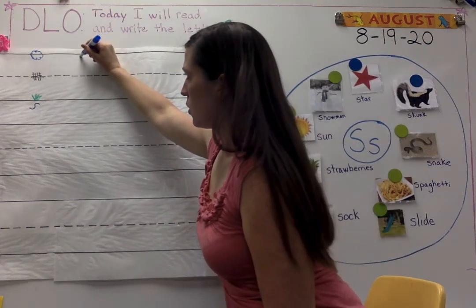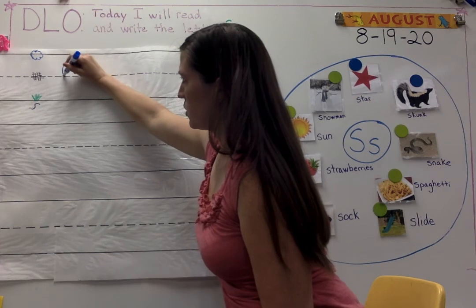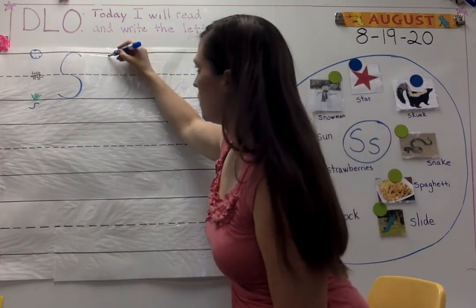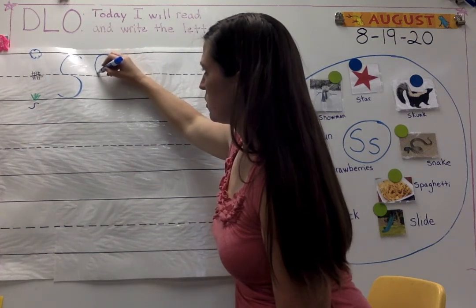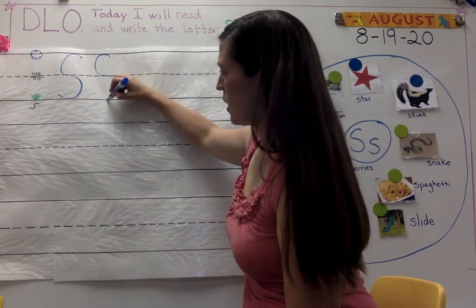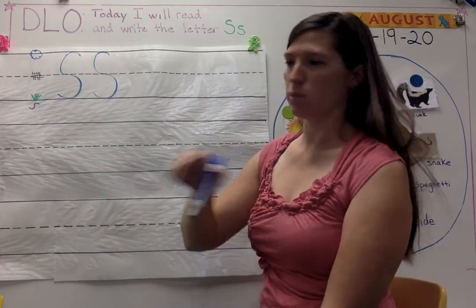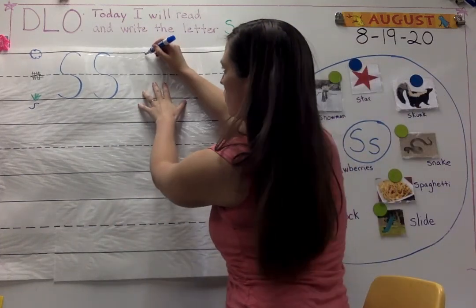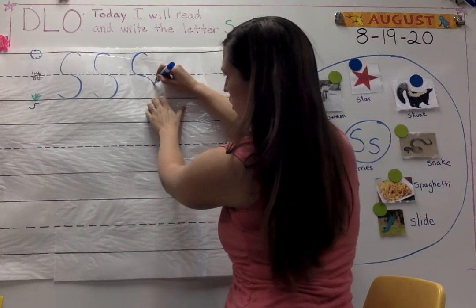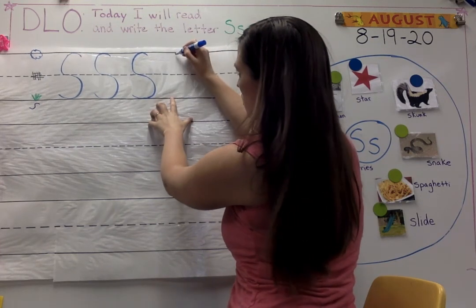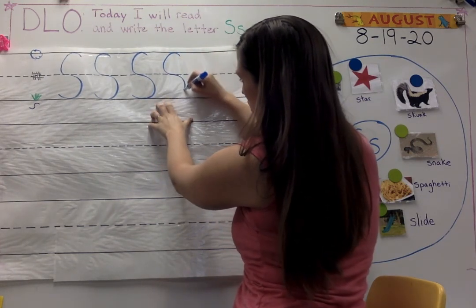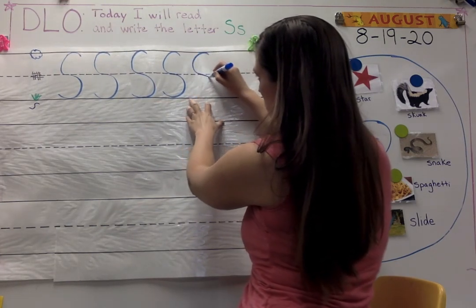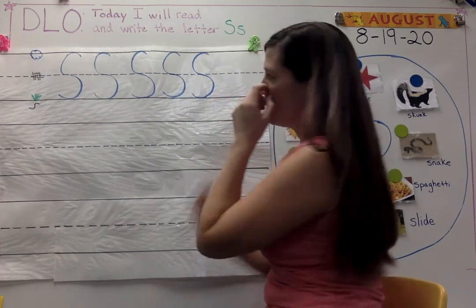Are you ready? Your best straight pointing finger and arm. And say it with me. Curve left, curve right. Let's do it again. Best pointer arm. Curve left, curve right. We're going to do it three more times. Best pointer finger, make sure it's a straight arm. Curve left, curve right. Curve left, curve right. One more. Curve left, curve right. Nice job.